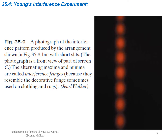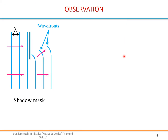What I just showed you was a drawing, but this is actually a real experiment. A red laser incident on a double slit produces what we observe on a screen: many bright dots separated by dark dots. This is called an interference pattern. The alternating maxima and minima are called interference fringes — a bright fringe and a dark fringe. To explain this, we need to look at diffraction.